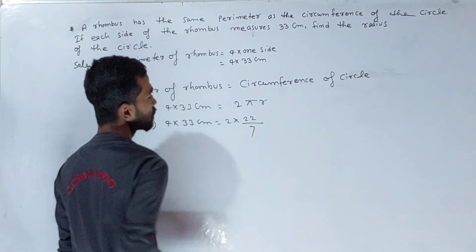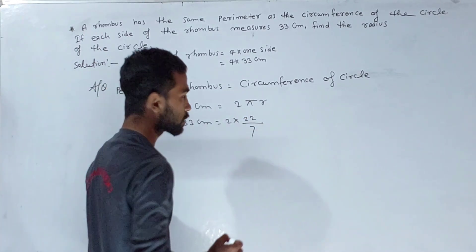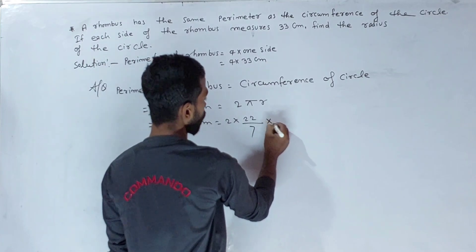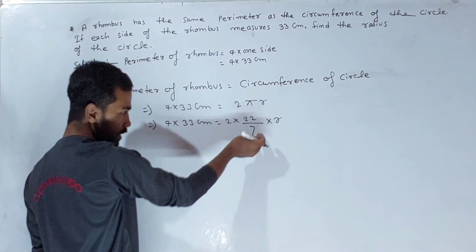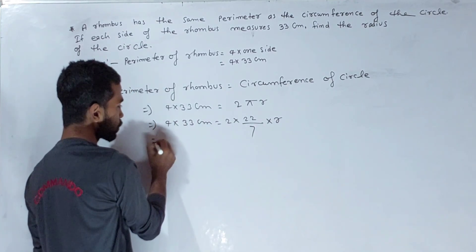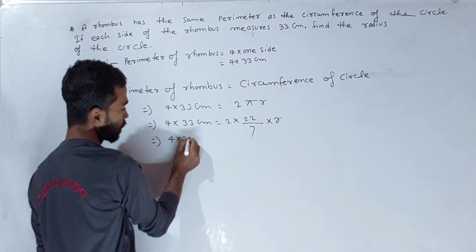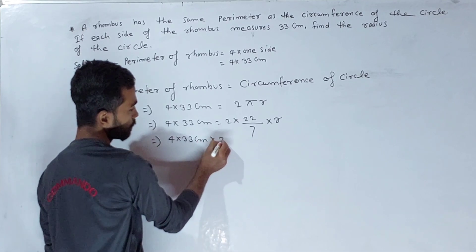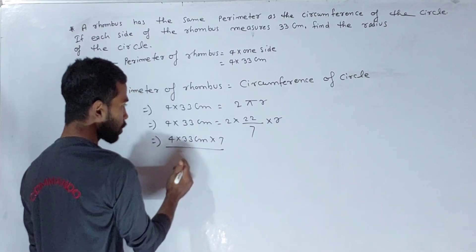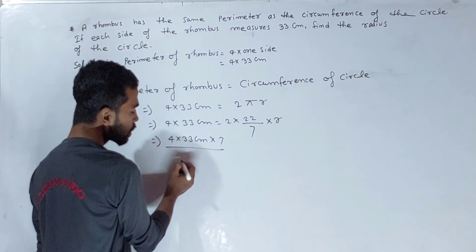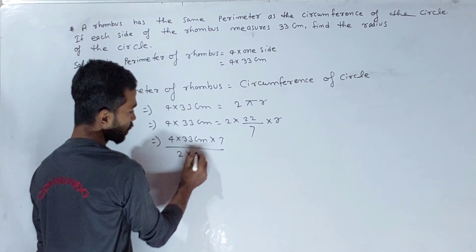Using pi equals 22 upon 7, we get 4 times 33 equals 2 times 22 upon 7 times r. Simplifying by cross-multiplication and canceling common factors, we solve for r.